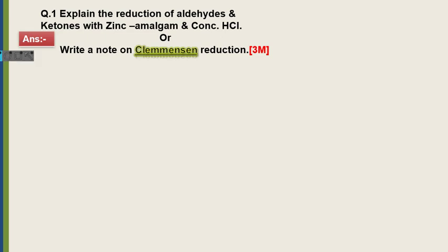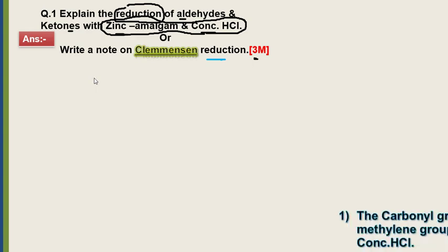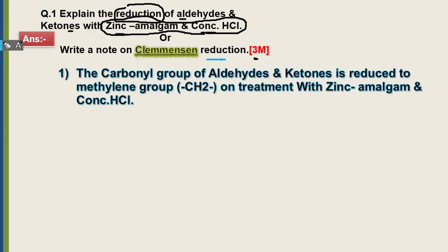The first question is: explain reduction of aldehydes and ketones with zinc amalgam and concentrated HCl — this is the Clemmensen reduction. 4 marks ke liye poocha gaya hai. Toh baccho, question ko samajhne ki koshish karte hain. Sir aldehyde aur ketones ka reduction karke dikhao by using zinc amalgam and concentrated HCl. Iska answer kuch points mein likhna hai.